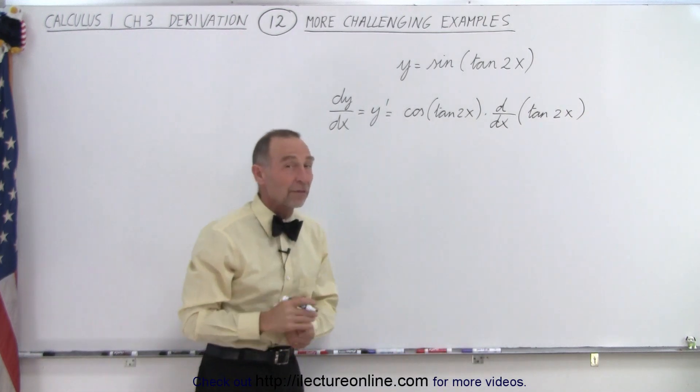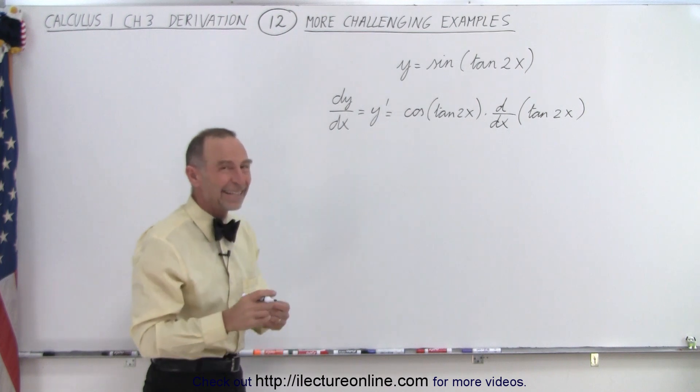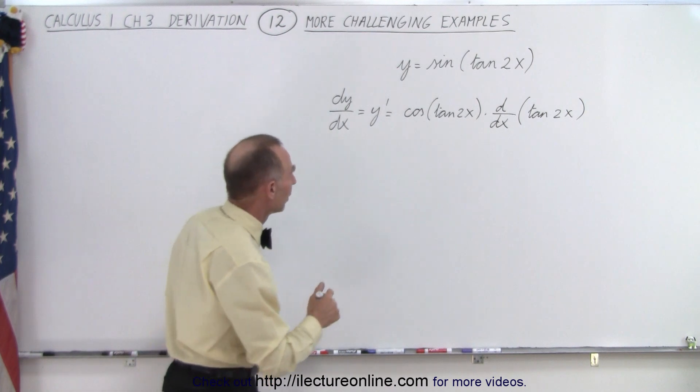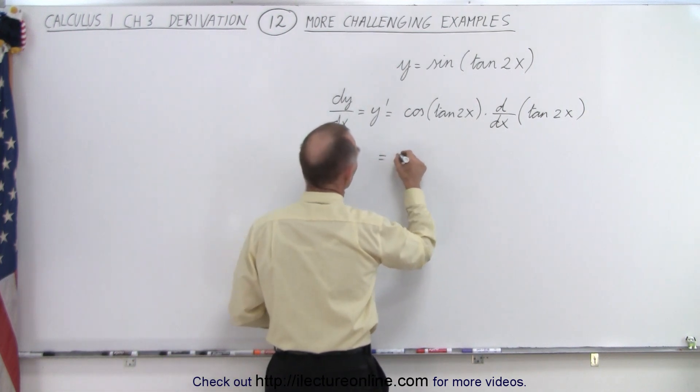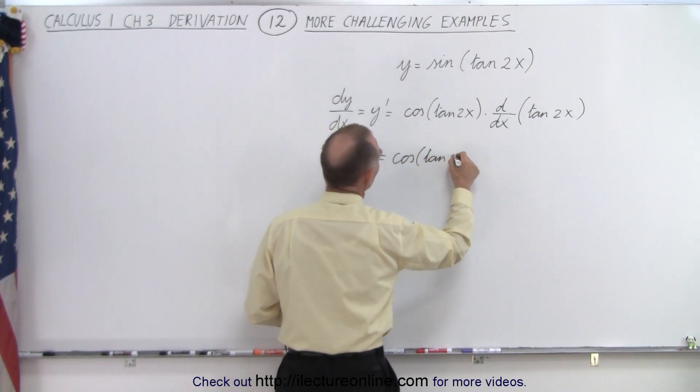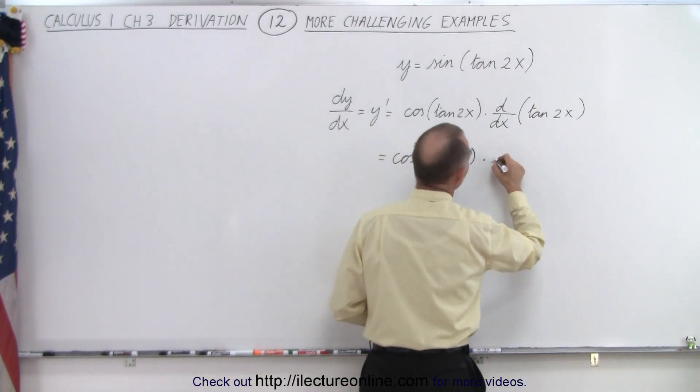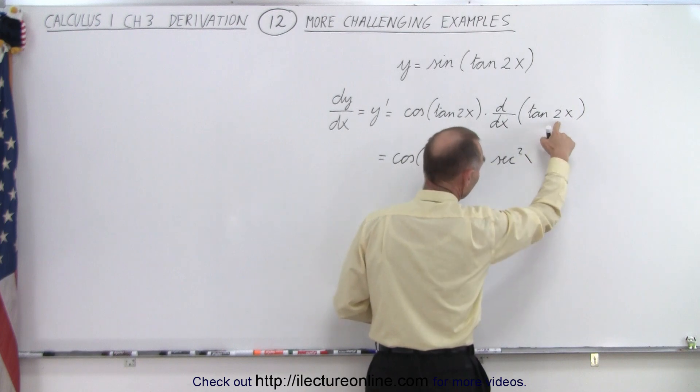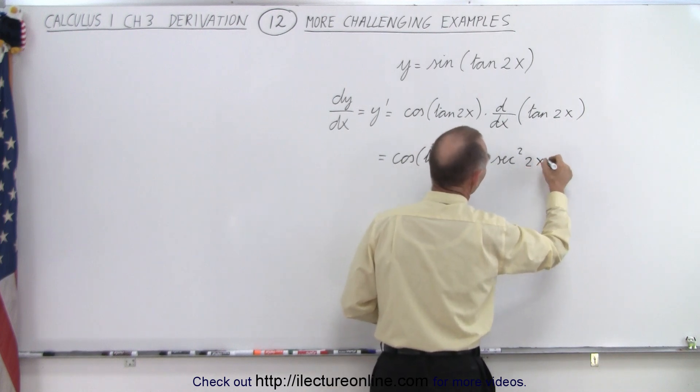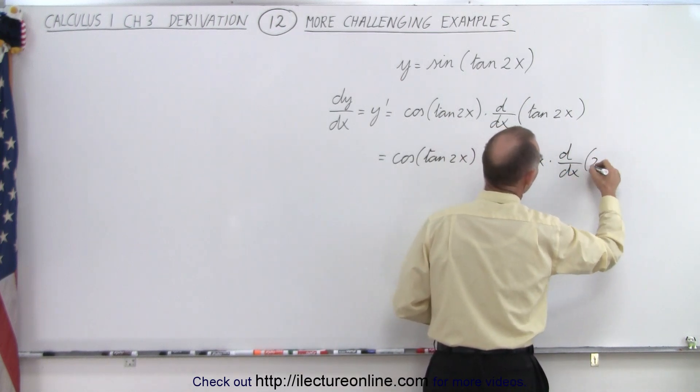So what is the derivative of the tangent? Well, this is where I made the error. The derivative of the tangent is the secant squared. So this becomes equal to the cosine of the tangent of 2x, times the secant squared of 2x - because that's the angle, the angle is 2x - times the derivative d/dx of the angle 2x.